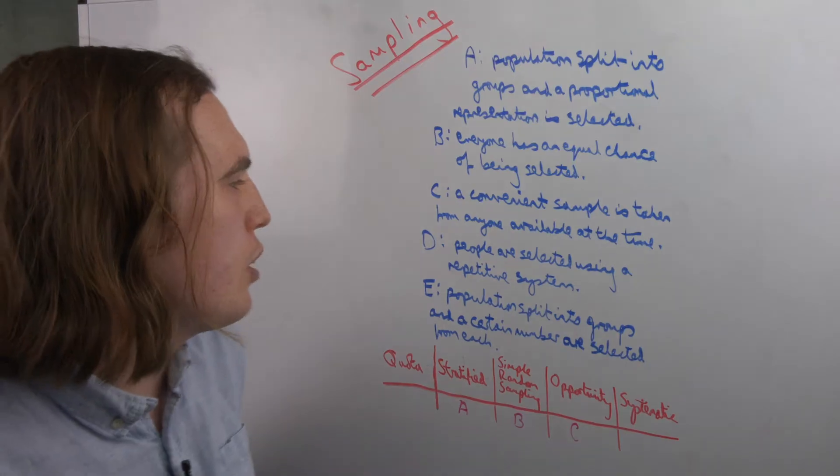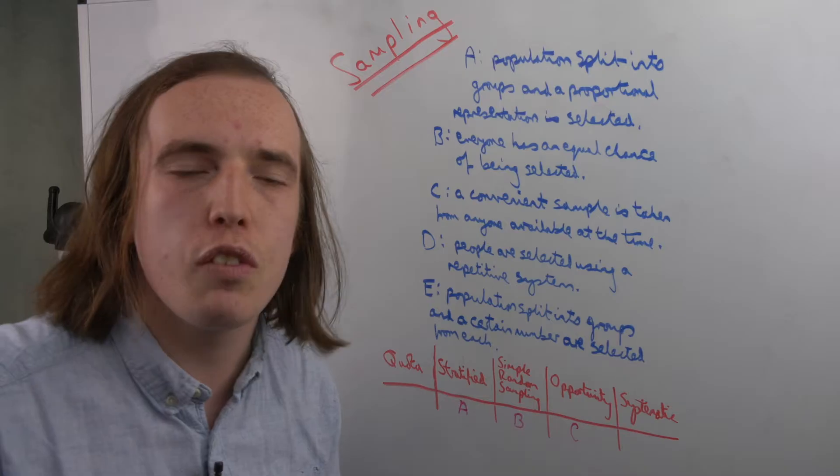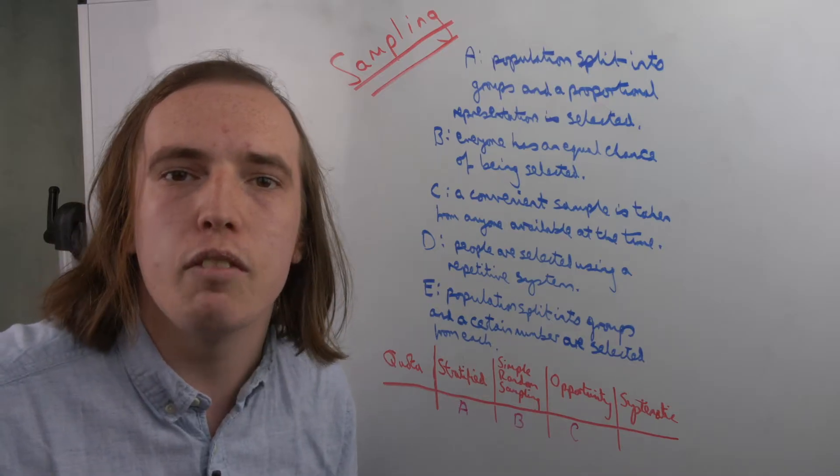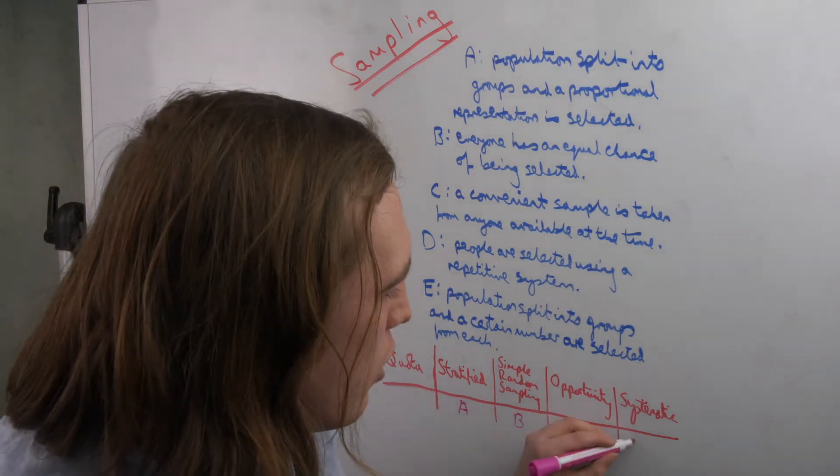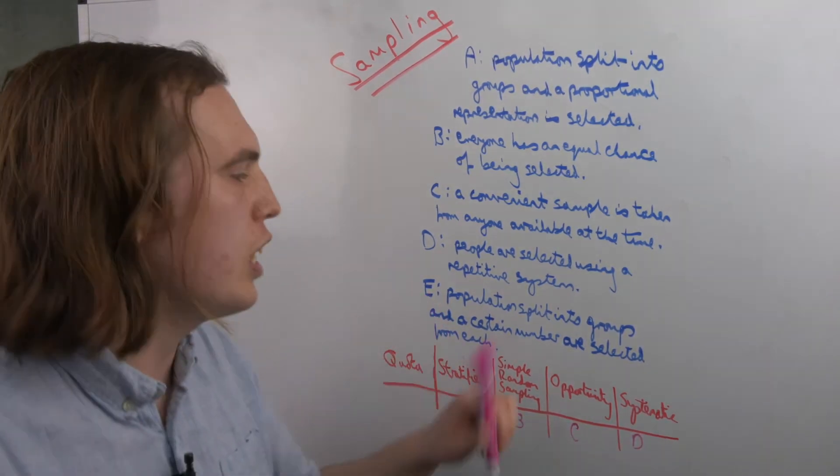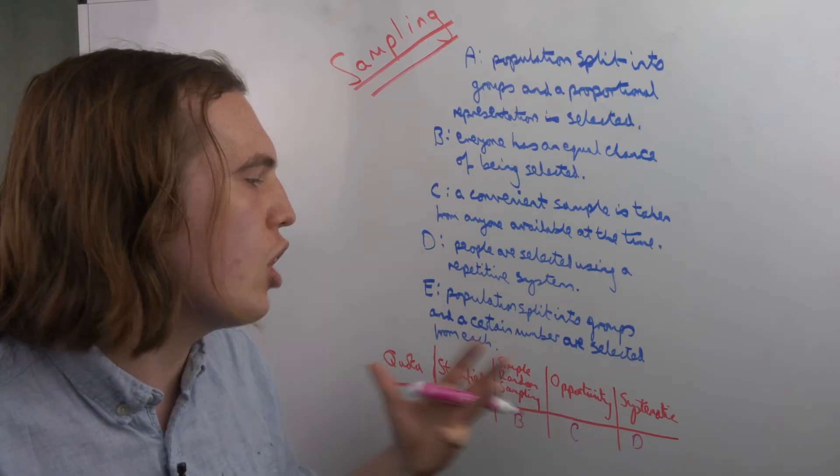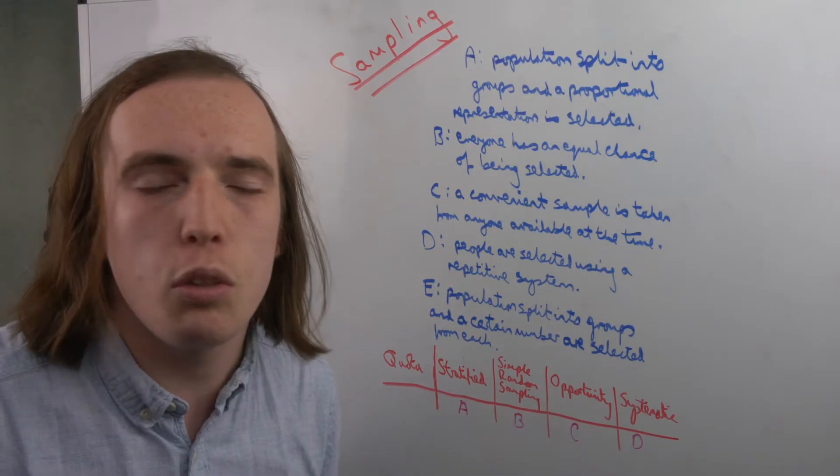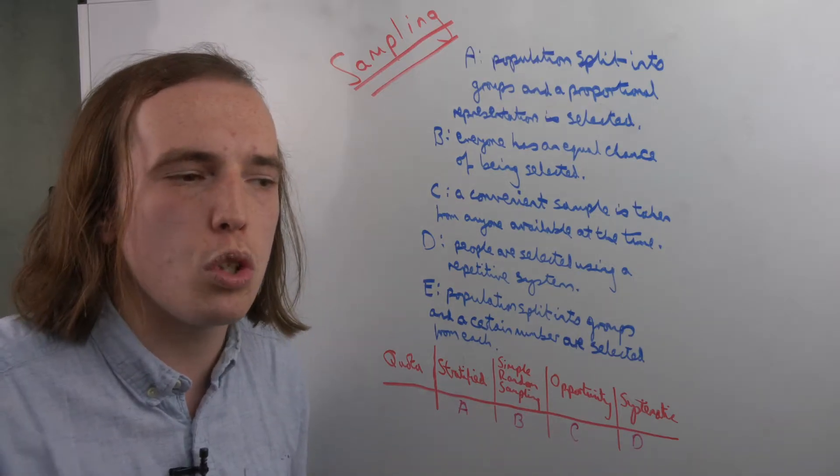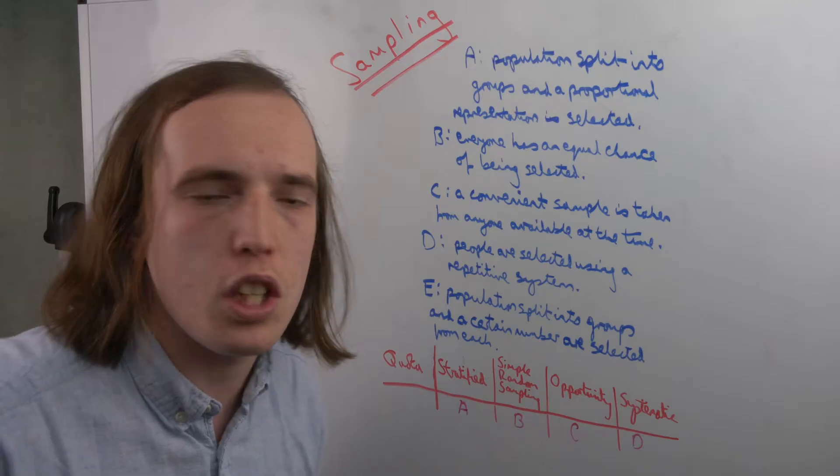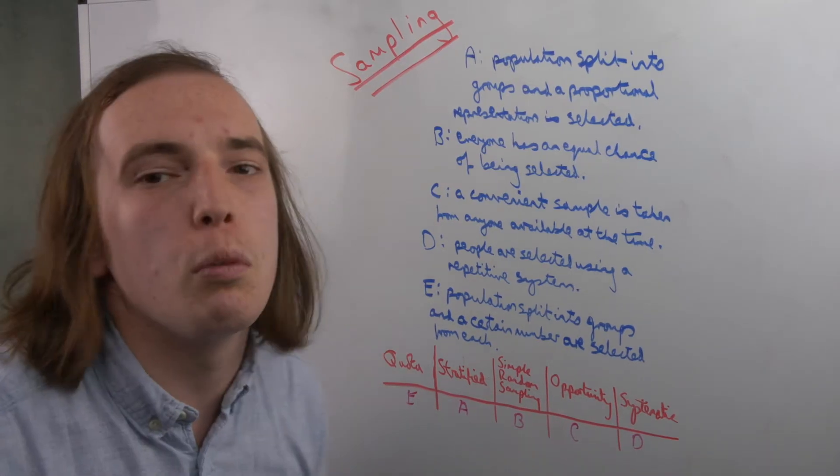D, people are selected using a repetitive system. Well, repetitive—it's going on in the same kind of intervals. You're asking, potentially, every fifth person, eighth person. That was systematic. And then, so lastly, the population is split into groups and certain number are taken from each. So again, we're splitting it into groups of people. But then, say, I only want two people from each. That is going to be a quota. So quota is then going to be E.